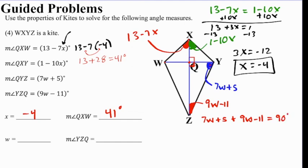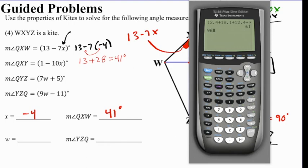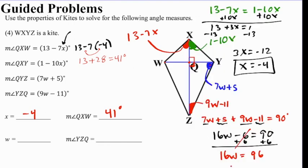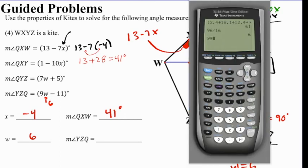We can combine like terms. 7w and 9w is 16w, and then the 5 and the minus 11 is minus 6 equals 90. We will add 6 to both sides. 6 is canceled. We're left with 16w equals 96. 96 divided by 16 gives us that w is equal to 6. Now they're asking for angle YZQ. If we plug 6 into here, 9 times 6 minus 11 gives us 43 degrees.